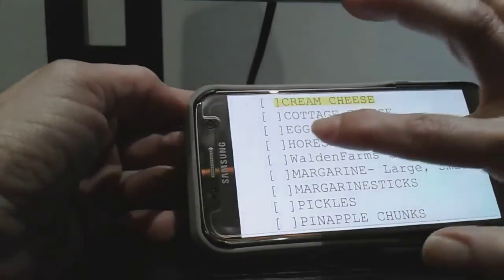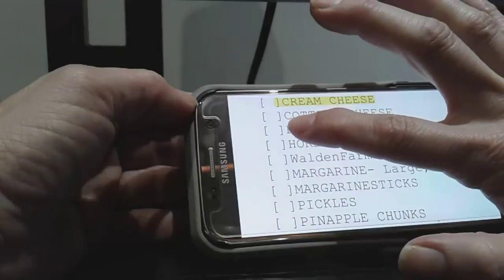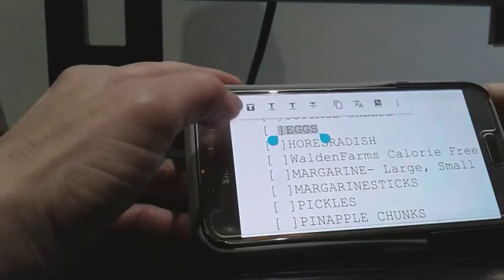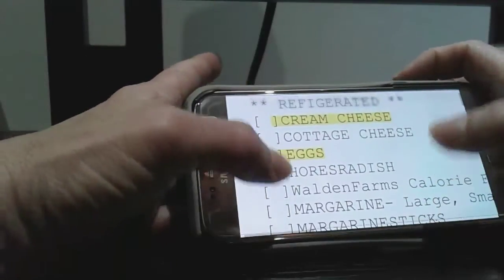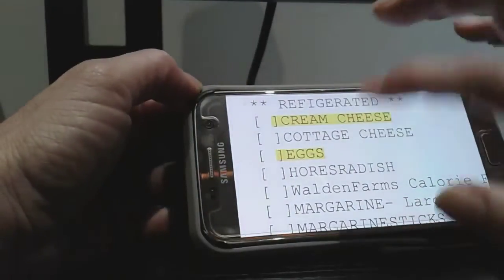So let's say I want some eggs. Do the same thing. Just press down, click on that T icon again, and now you can see it's got my eggs highlighted.